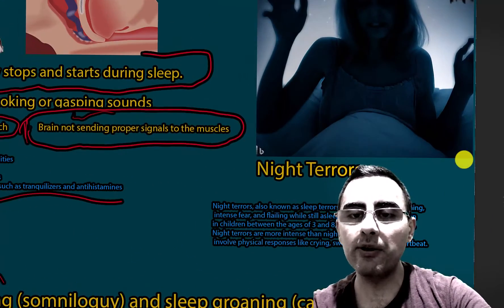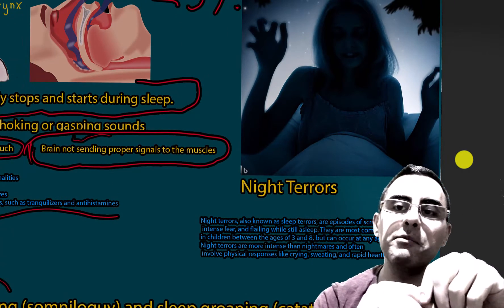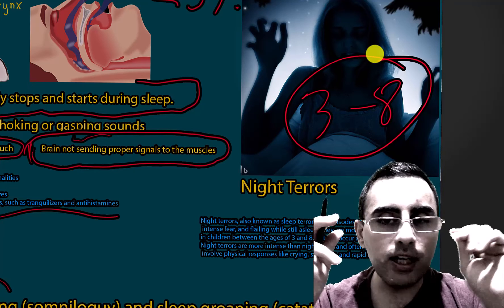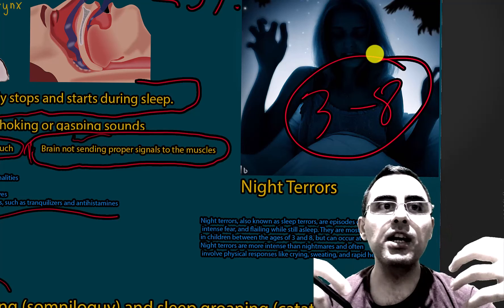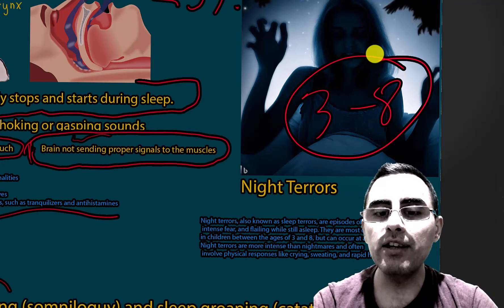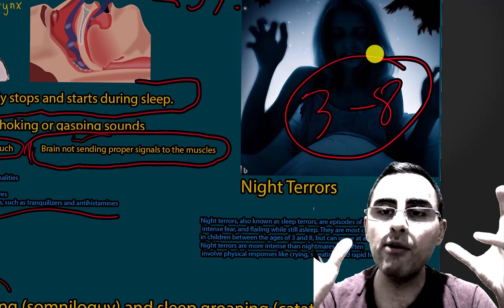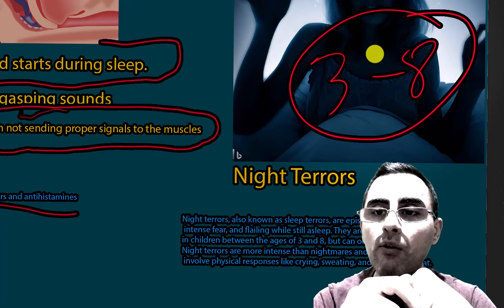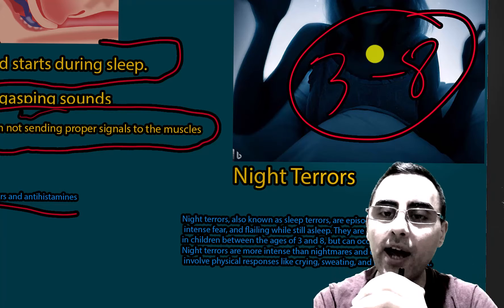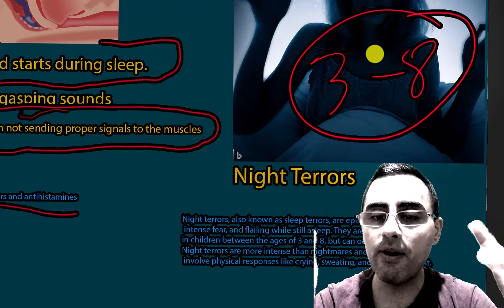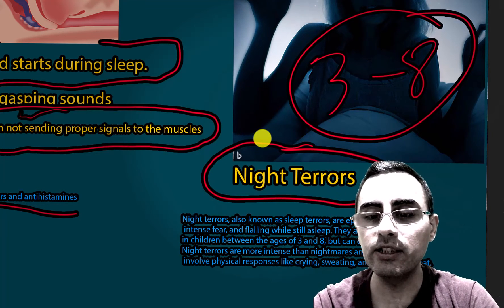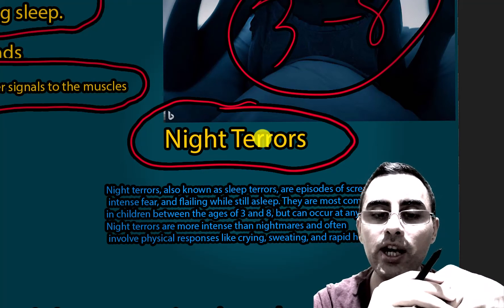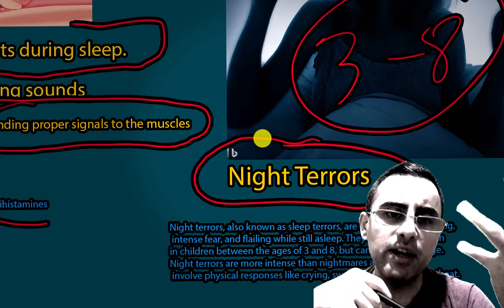Night terrors typically affect children aged three to eight years old. Children experiencing night terrors get up screaming, with a high heart rate and sweating — various physiological symptoms — and they are very frightened. Importantly, they do not remember the episode. Parents usually try to wake the child, but the child does not remember anything at all. That is night terrors.